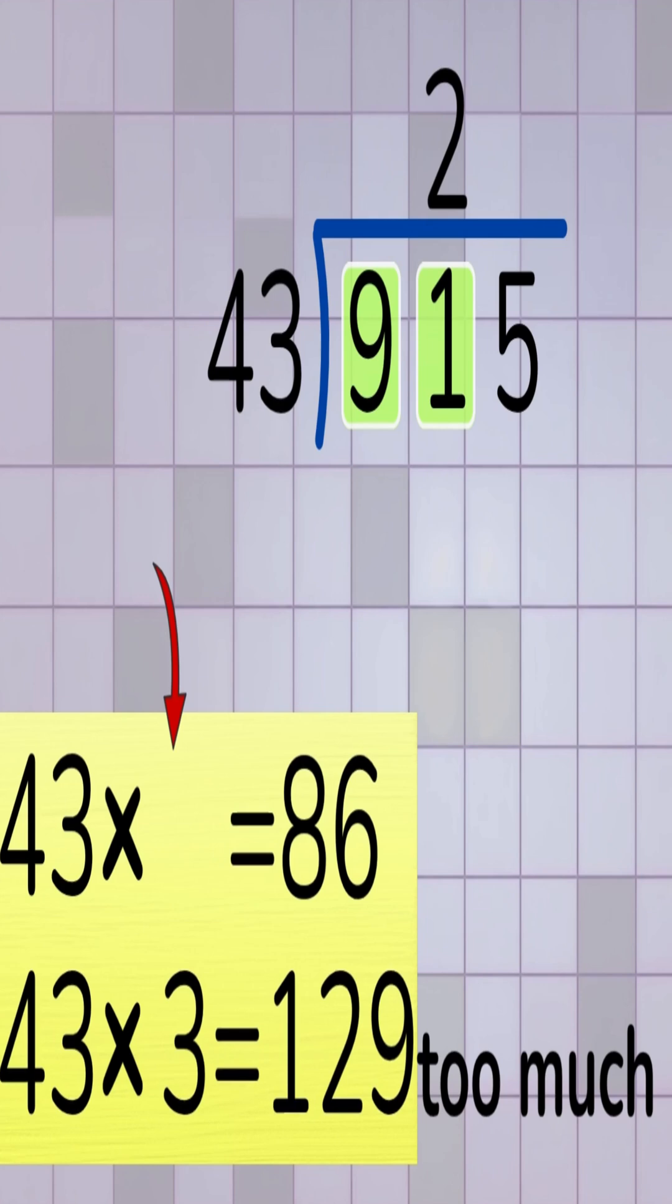Now we write 2 as the first digit of our answer. We multiply 2 times 43. That gives us 86. Now subtract 86 from 91. 91 minus 86 equals 5.